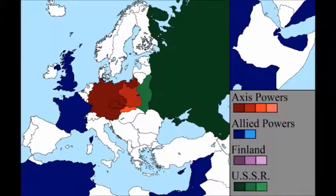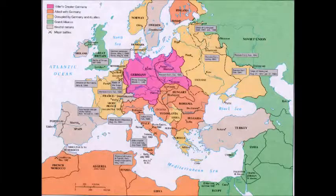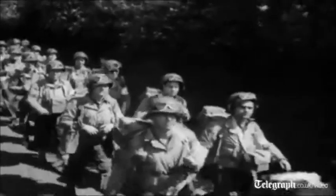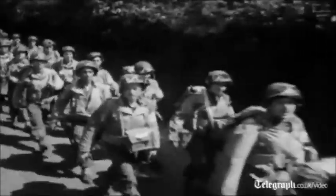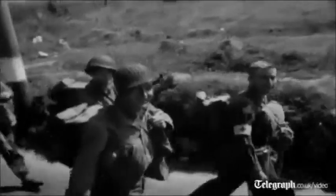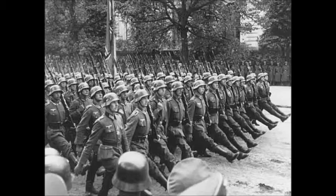In 1939, war erupted in Europe between the Allied Nations and the Axis Nations. The major Allied countries were China, France, England, the Soviet Union, and Poland. They were joined by the United States in 1942 after the bombing of Pearl Harbor. The major Axis countries were Italy, Germany, and Japan.